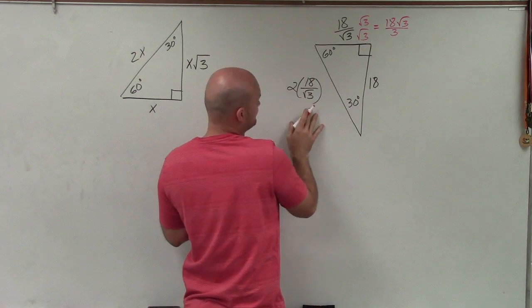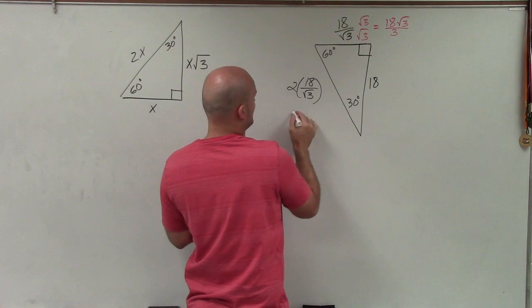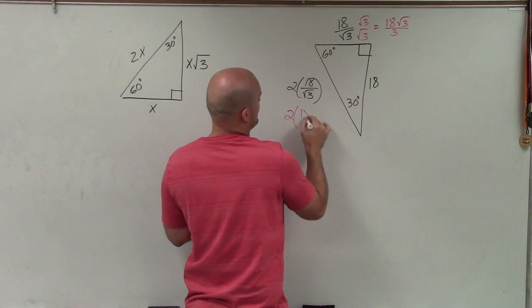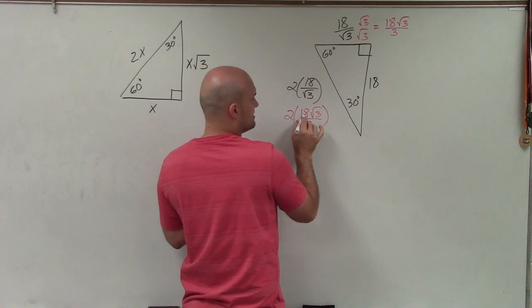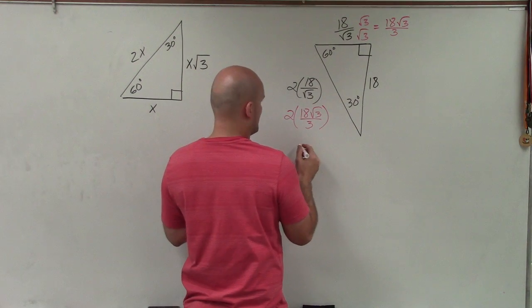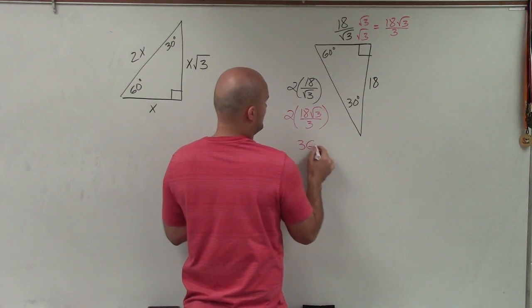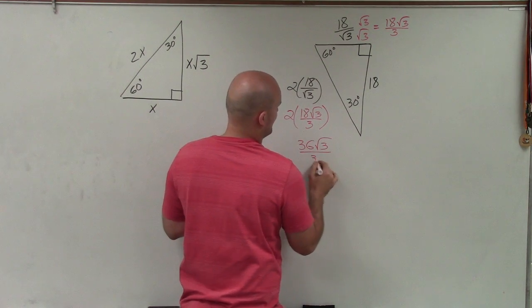And in this case, I can do that as well. So therefore, I really have 2 times 18 times square root of 3 over 3, which this now becomes 26 divided by 3. I'm sorry, 36 divided by 3. 36 square root of 3 divided by 3.